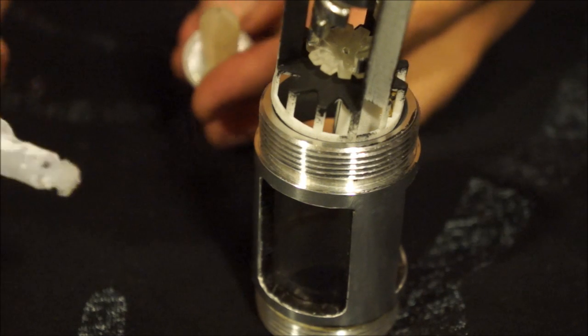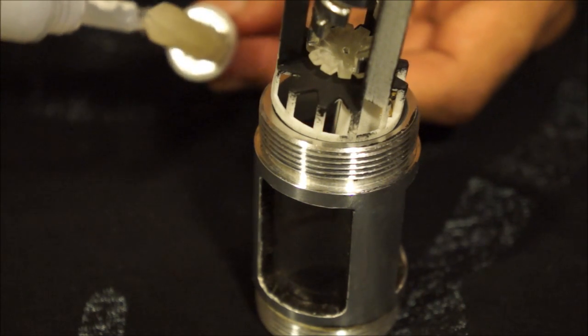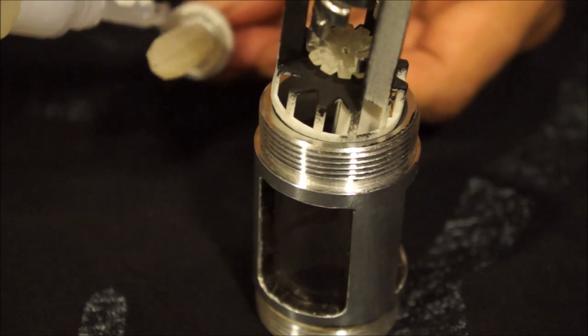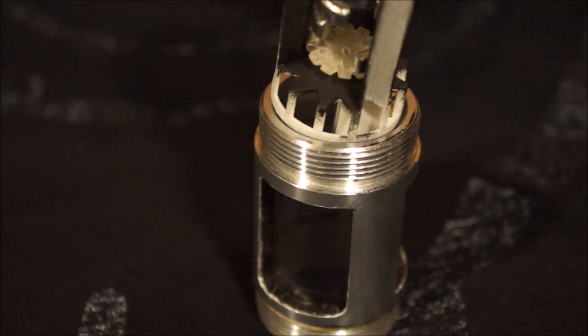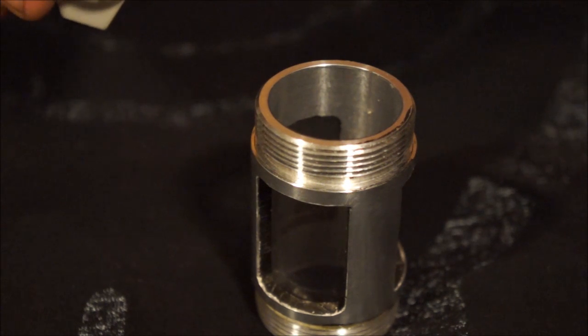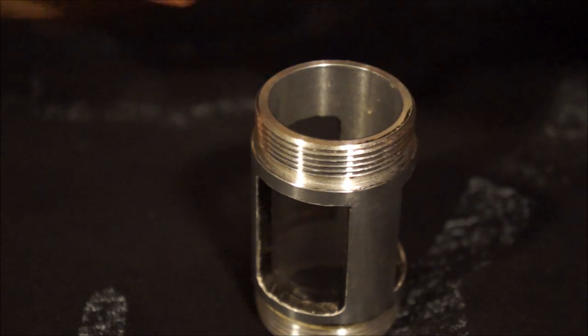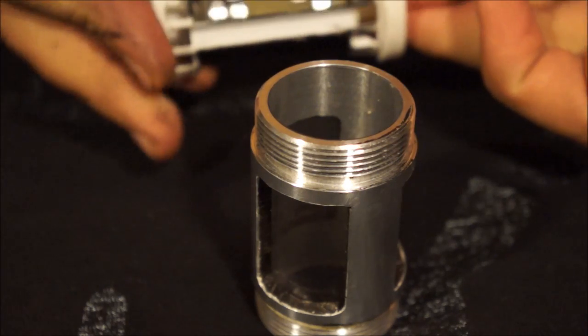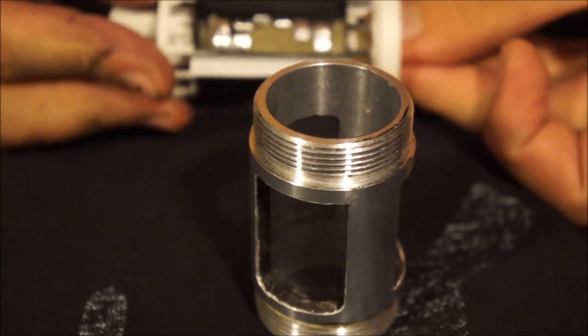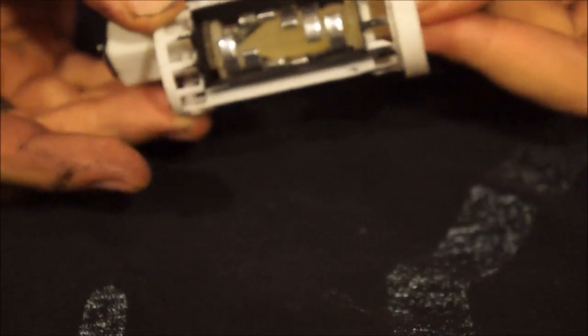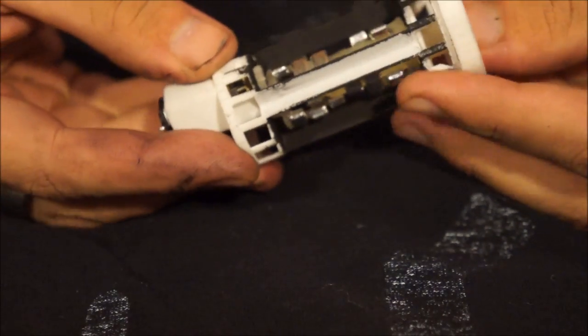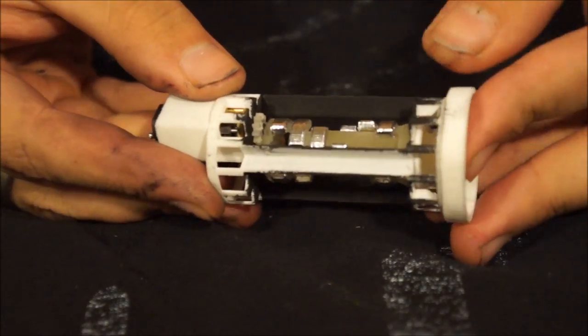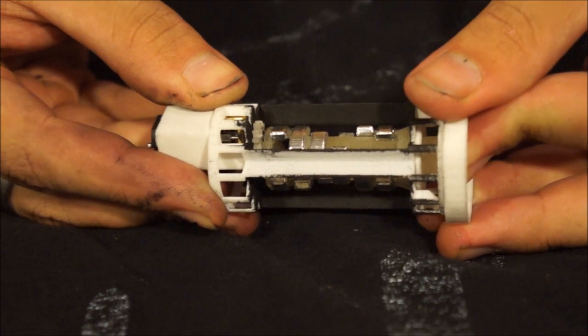And then take your adhesive of choice, in my case super glue, and just kind of run another bead just around this edge here. And then bring these two pieces together. And then rotate the crystal to whatever face you want. These are going to be your window, so pick whichever pretty face you want pointing forward. And then just let those guys cure up and dry.